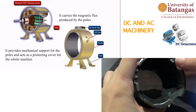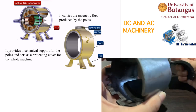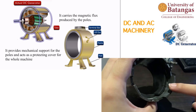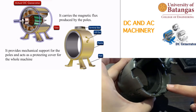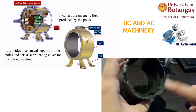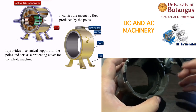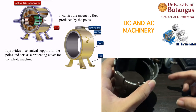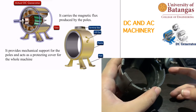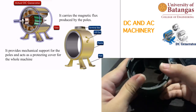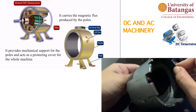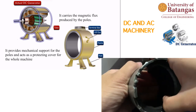For the yoke material, if we want to save cost we use cast iron, which is molded. For larger machines we normally use steel because it has greater mechanical strength. Steel can be cast (molded) or rolled — a flat plane of steel is rolled and then welded to form the housing.